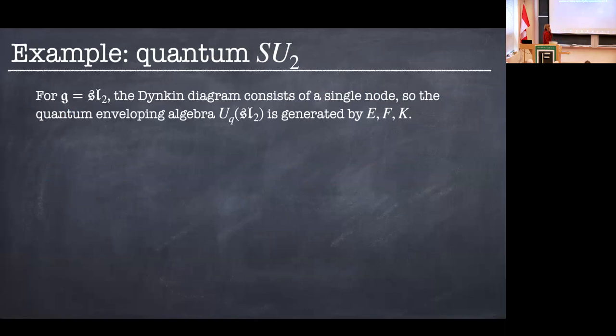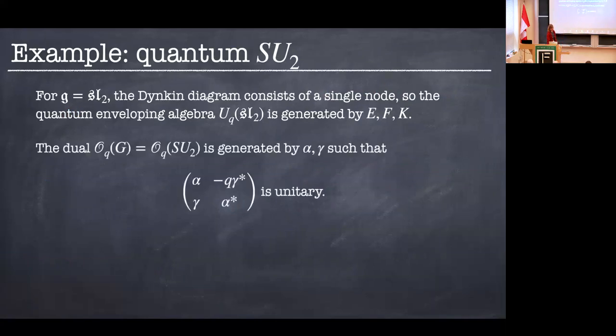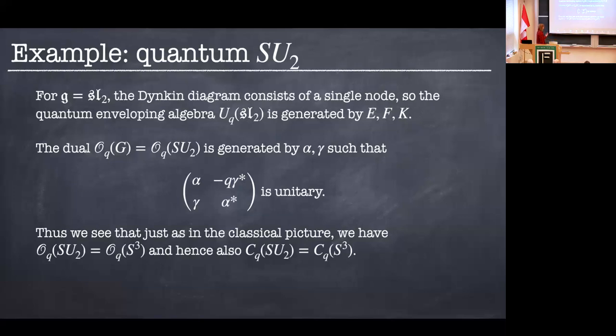So a very important example is for G is SL_2. So the Dynkin diagram is just a single node, doesn't matter which of the series we take, it's just a single node in any of them. And so our enveloping algebra is just generated by E, F, and K, quantum enveloping algebra. And our dual is going to be generated by two elements, α, γ, subject to the relations that this matrix here is unitary. And a cunning eye will spot that we saw this already. Just as in the classical picture, we get that O_q(SU_2) is just O_q(S^3). And so also at the quantum group level, we get this isomorphism.